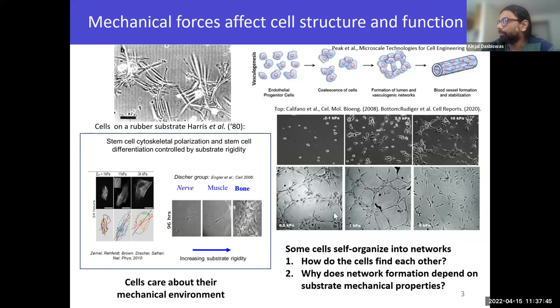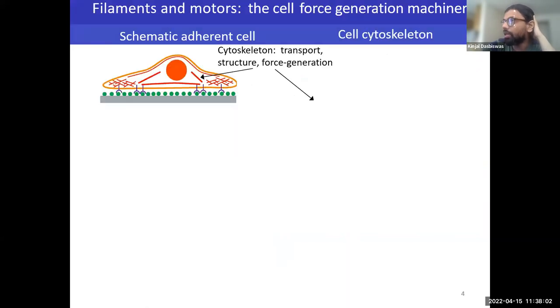The main questions that we are asking in our research is, how do these cells find each other in the first place, which apparently is not so well understood even now? And the second question is, why does the network organization depend so sensitively on the substrate stiffness?